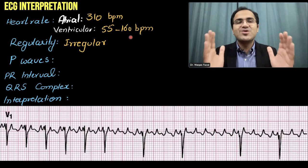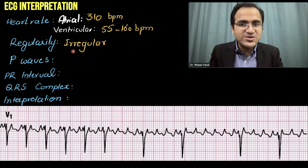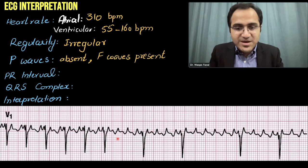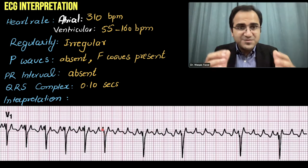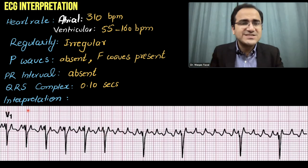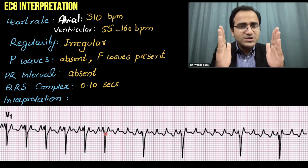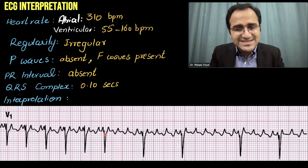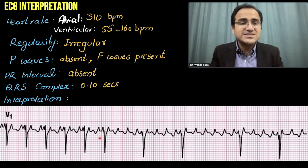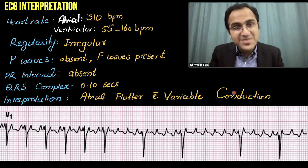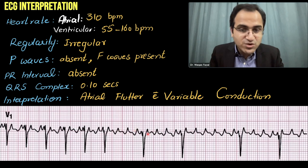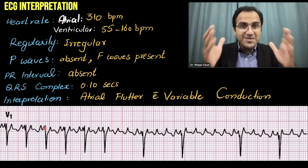The rhythm is irregular. P waves are absent; there are flutter waves. PR interval is absent because there are no P waves. The QRS complexes are narrow — less than three small boxes wide — which is a normal QRS. In this ECG we can see a 4:1 ratio in one section and a 2:1 ratio in another, confirming this is atrial flutter with variable conduction.